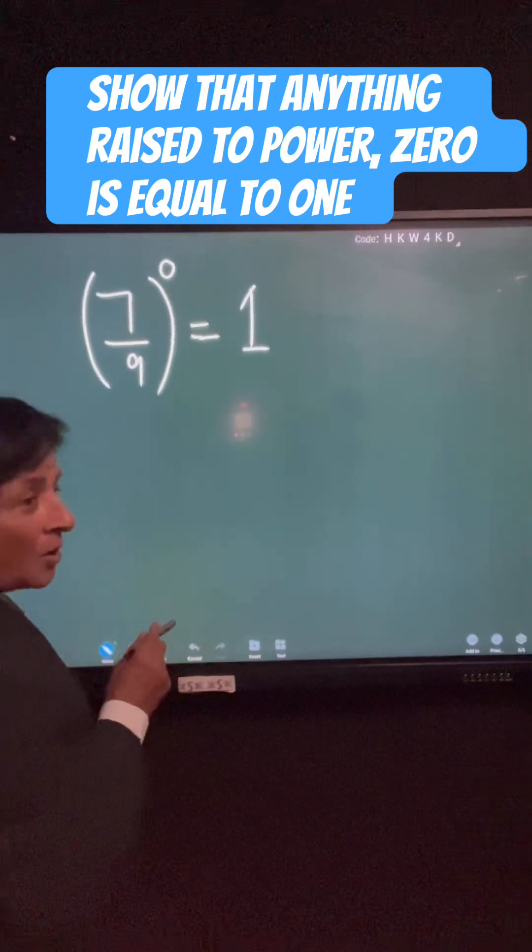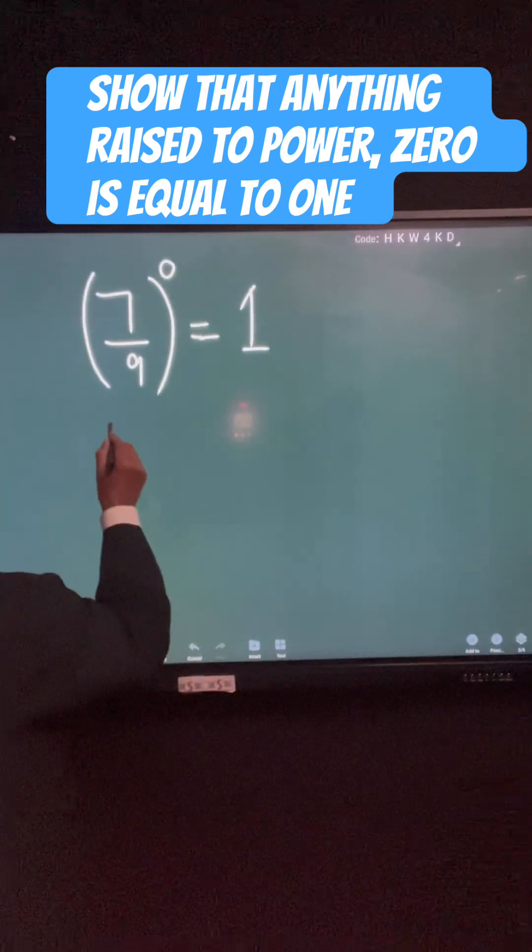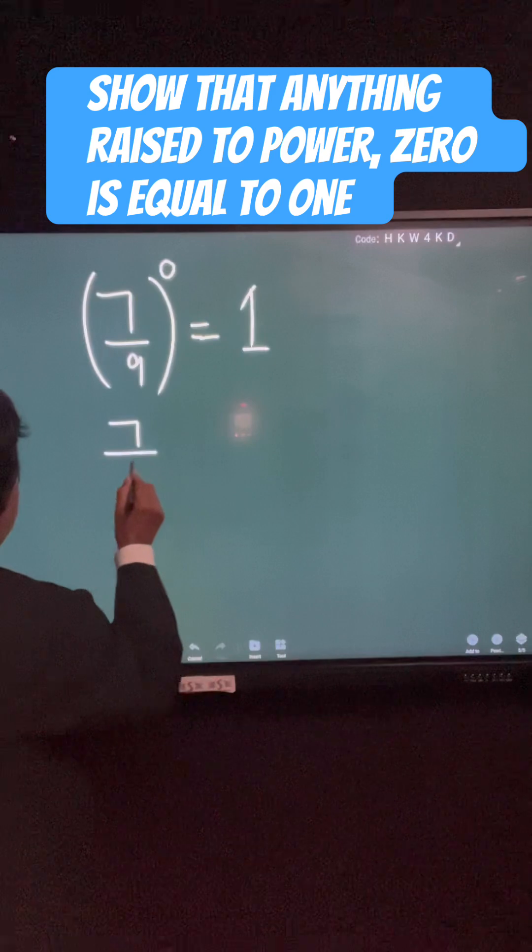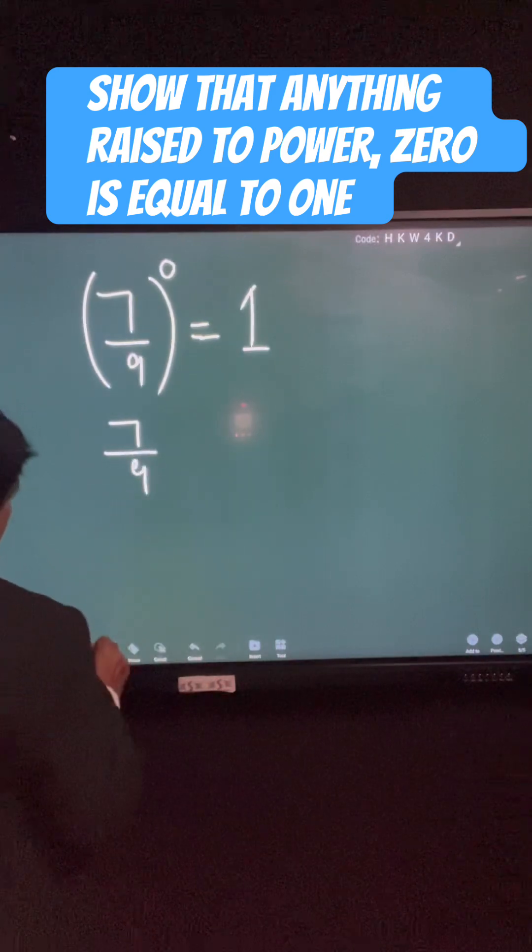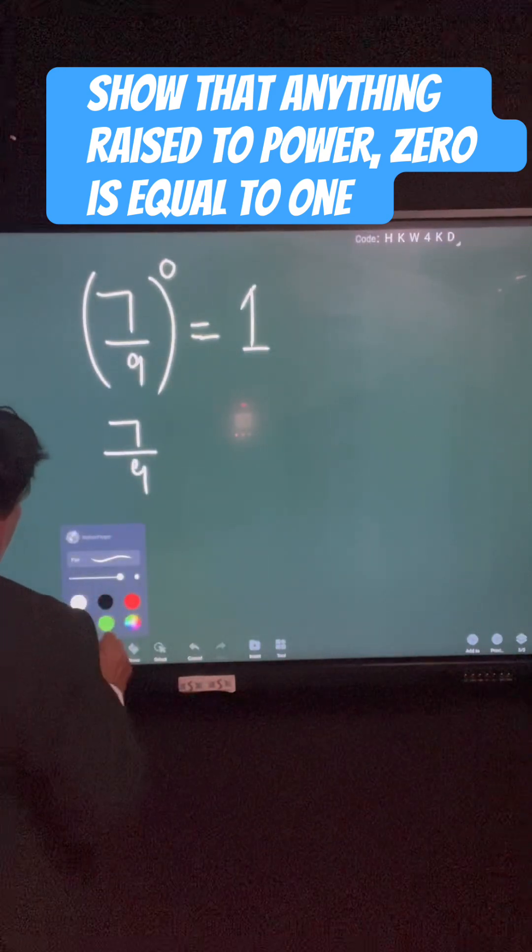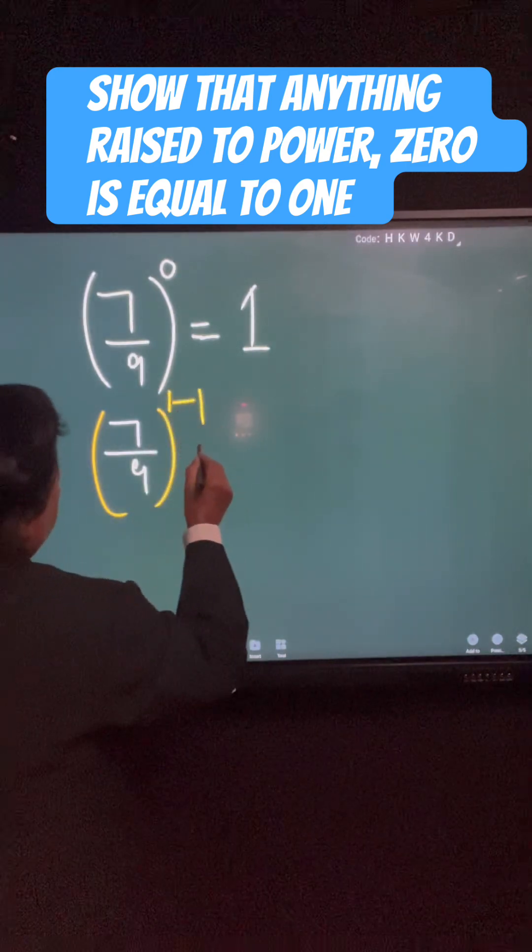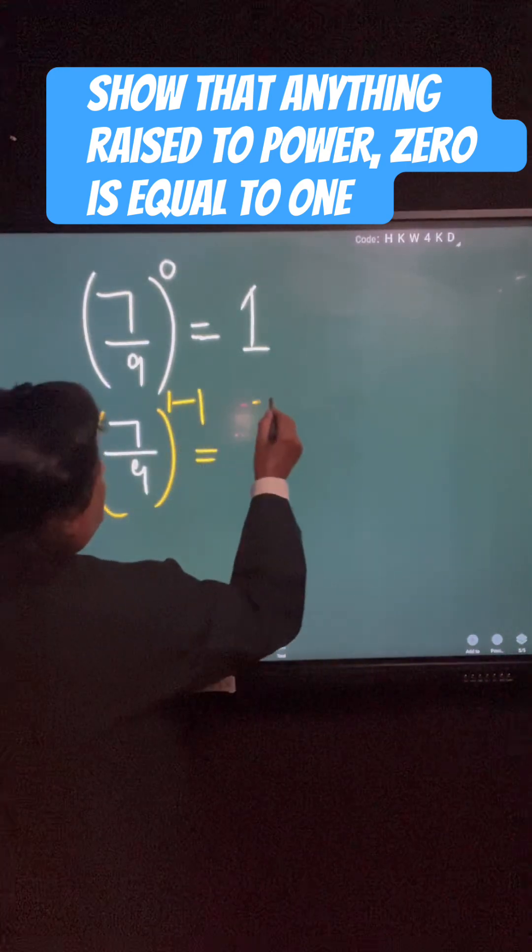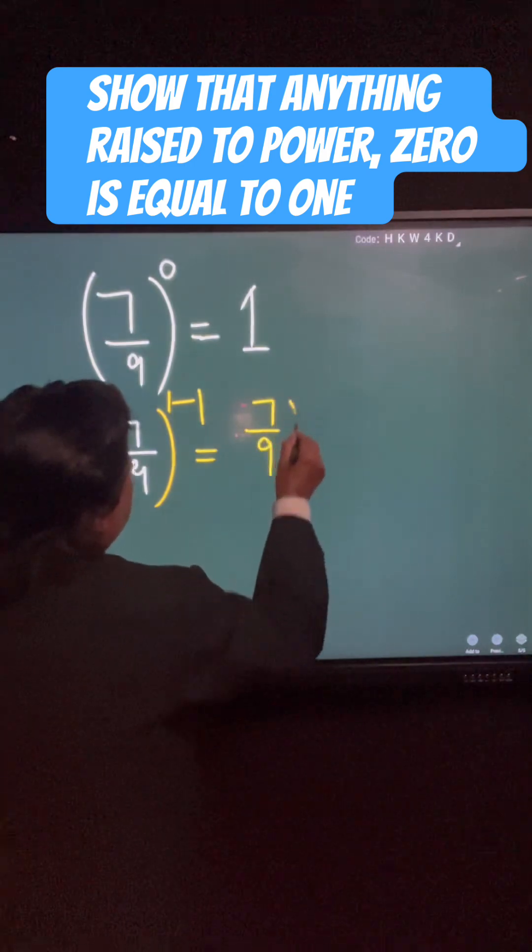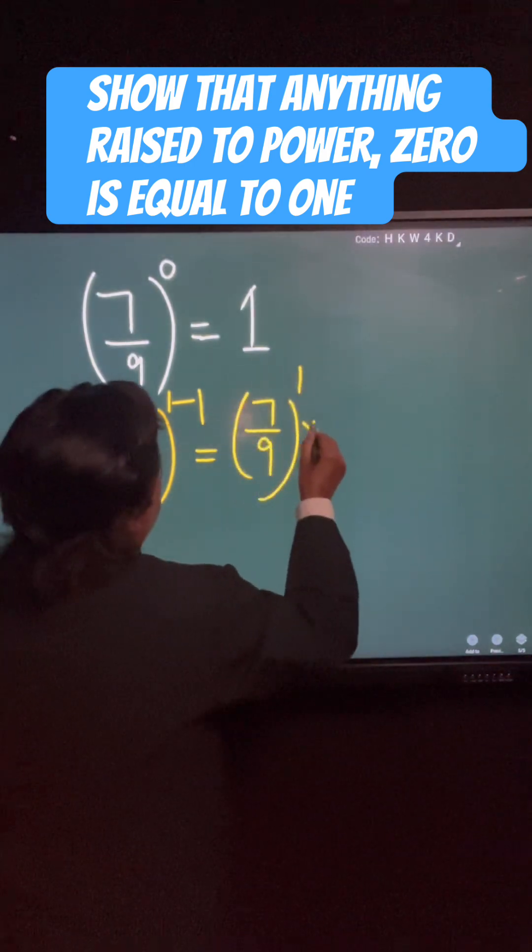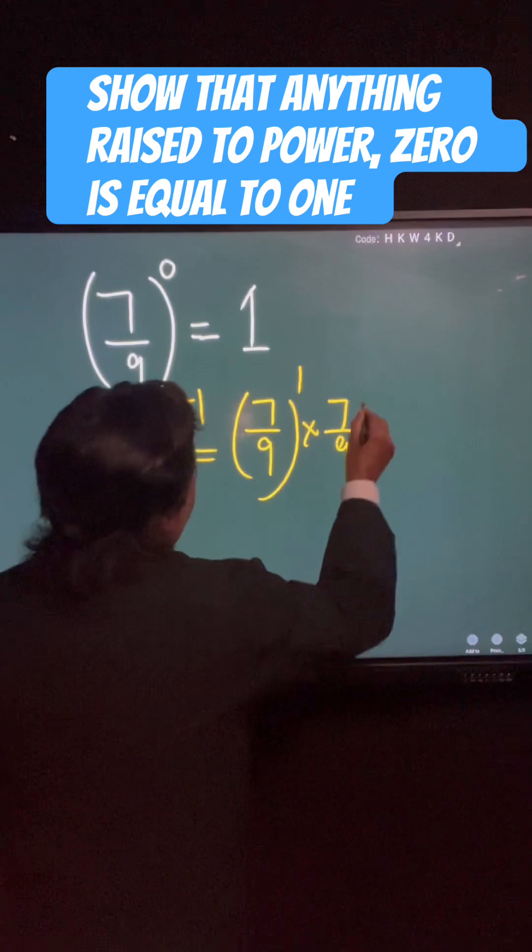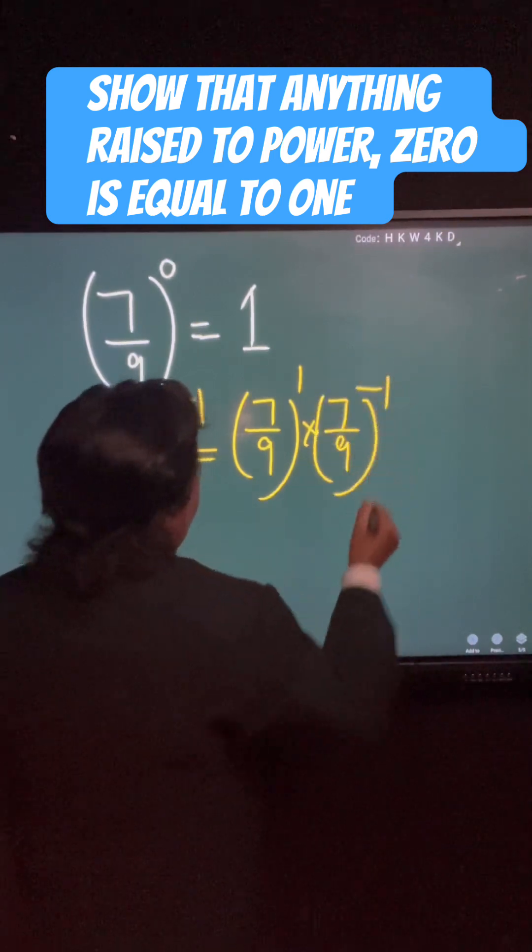Well, dear students, you can write 7 upon 9 to the power 0 as 1 minus 1. Now this is 7 upon 9 to the 1 times 7 upon 9 to the minus 1.